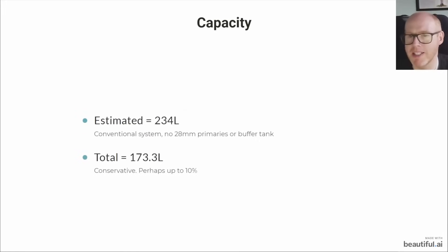Now, before we get into the recommended for a Vaillant heat pump, we estimated 234 litres and my total came at 173.3. So if we're using these rules of thumb to measure, we're probably going to the wrong side. We want more system volume for our heat pump to run really optimally and efficiently. This estimate is for a conventional system not with a buffer tank and not with 28 mil primaries, so it's way off once you start adding those in.